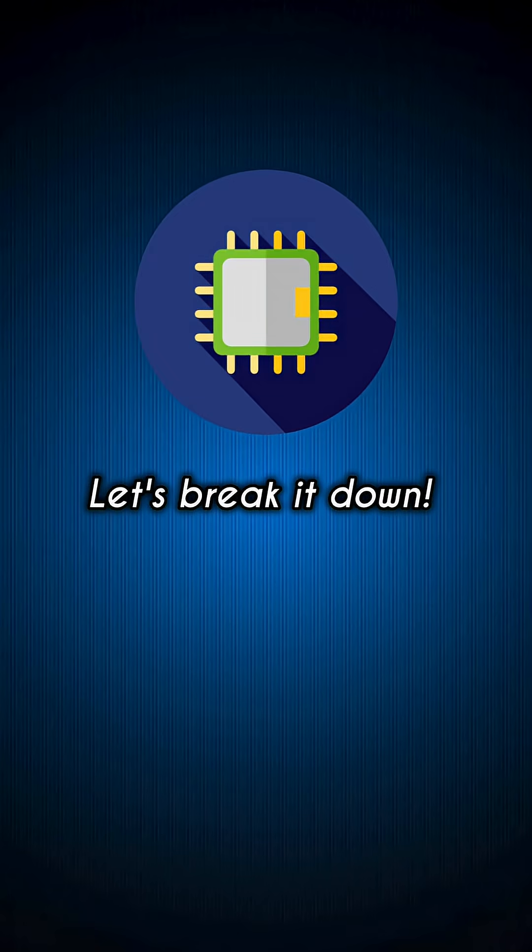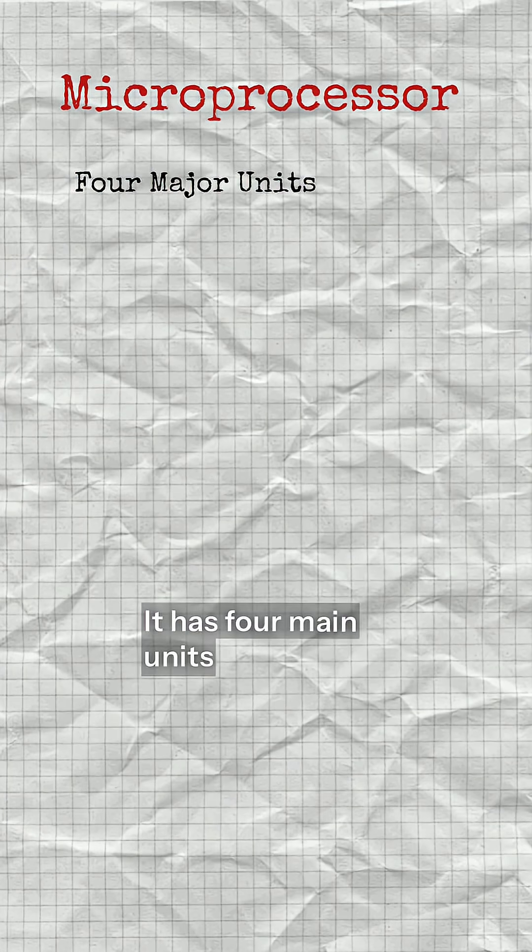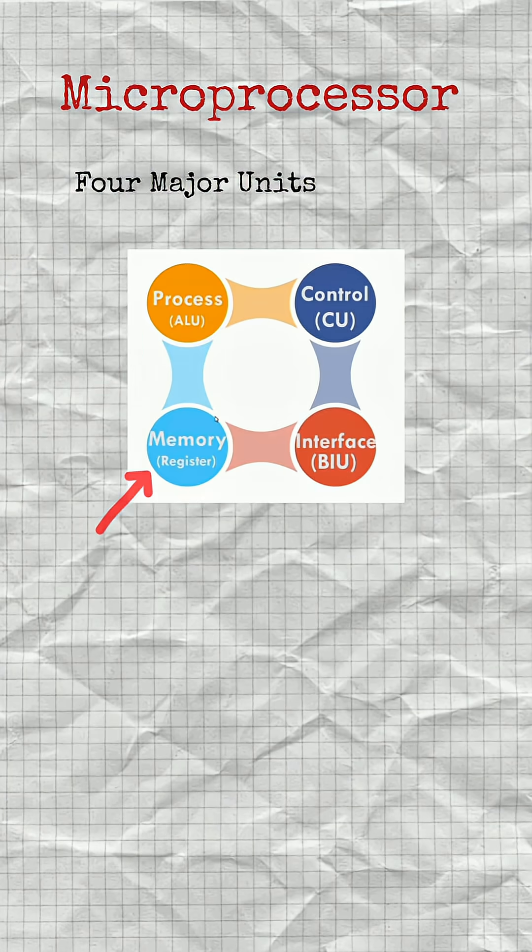So let's break it down at the top level. It has four main units: processing, control, memory, and interface.